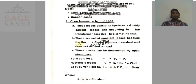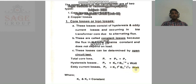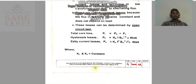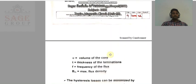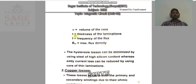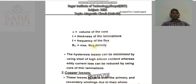The formula for eddy current loss, also denoted as PE, is: PE = KE × F² × BM² × T² × V. Where KE is a constant, V is the volume of the core, T is the thickness of the lamination, F is the frequency of the flux, and BM is the maximum flux density.